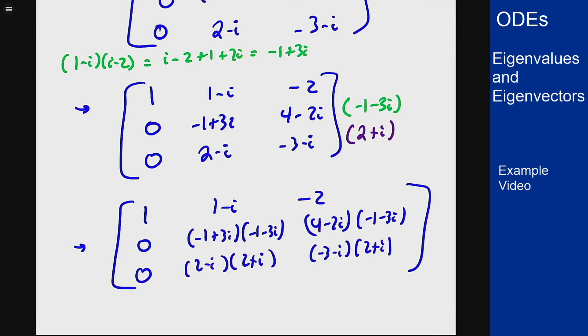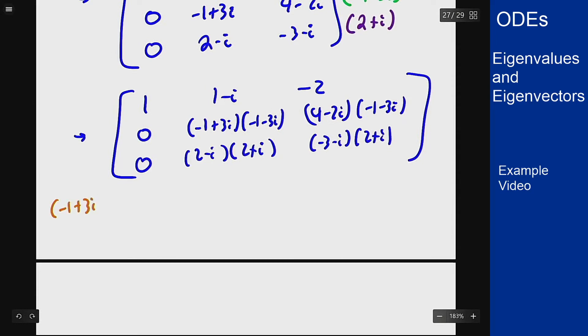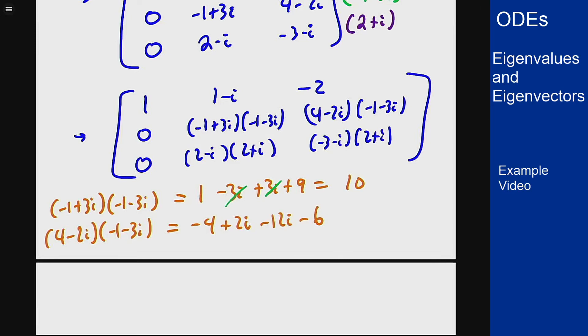We should work on all these complex numbers here to see what we get. So (-1 plus 3i) times (-1 minus 3i) is going to be 1 minus 3i plus 3i and then 3i times -3i is 9, so plus 9. It's going to give me a 10 there. And this is a difference of two squares, it always is, so these will always cancel out. For the other part of that row, (4 minus 2i) times (-1 minus 3i) is -4 plus 2i minus 12i minus 6. Two minus signs plus the i squared gets me a minus 1. This is -10 minus 10i.